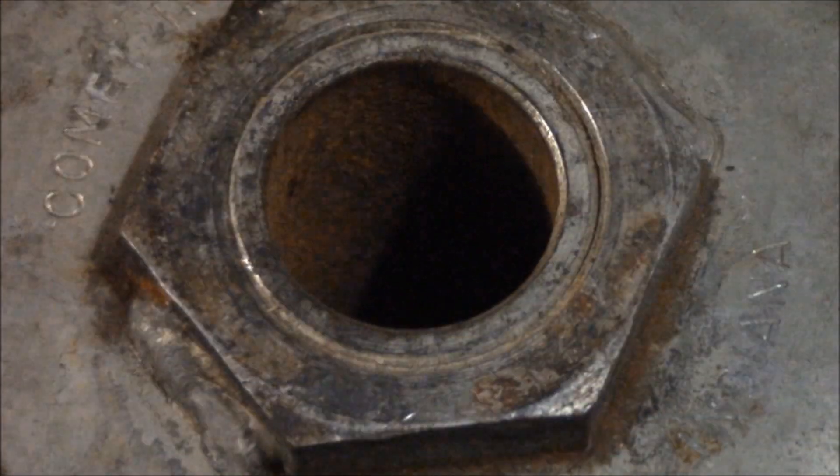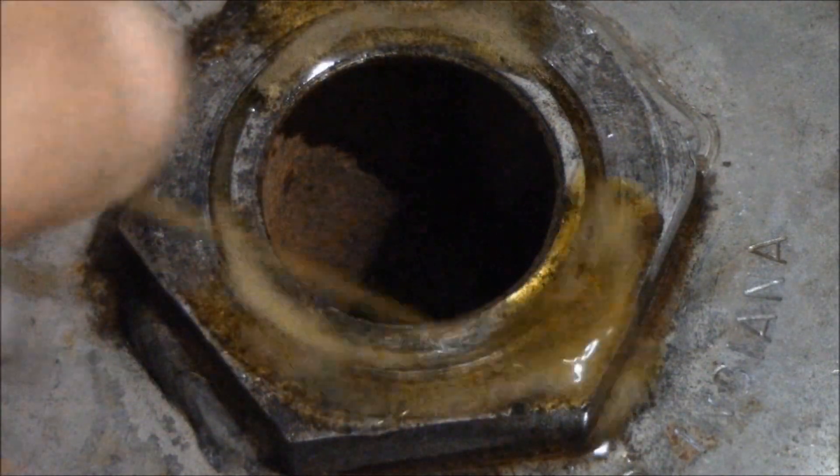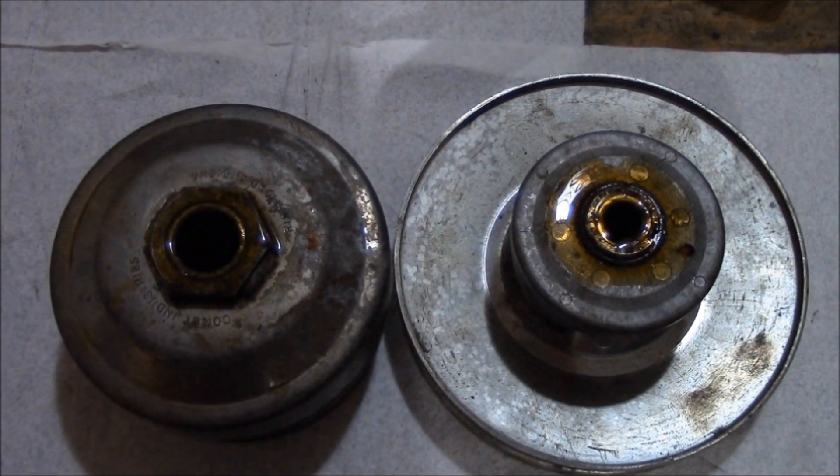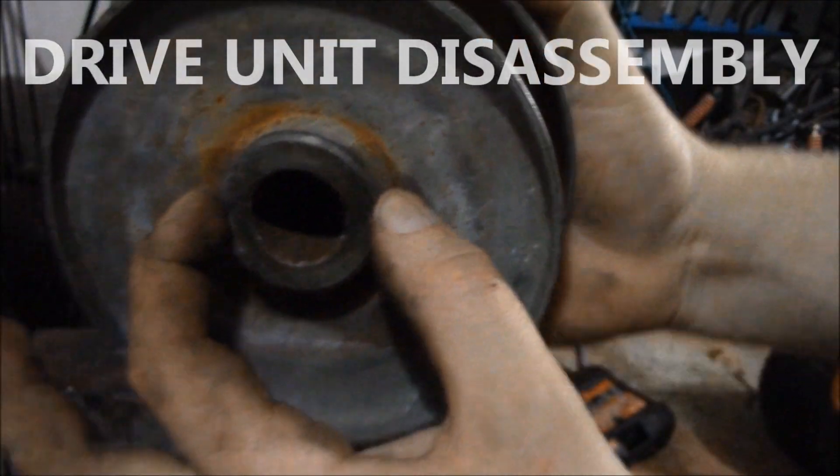You want to go ahead and use a PB blaster or a penetrating lubricant to spray on the drive and driven unit on these locations. This will allow it to penetrate and allow for easy disassembly.